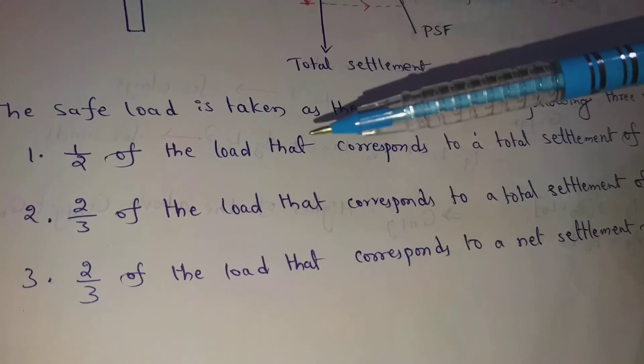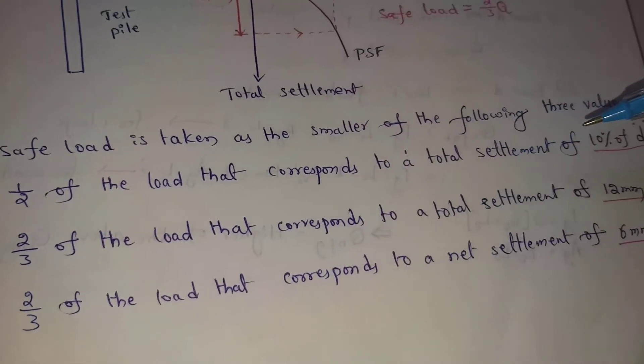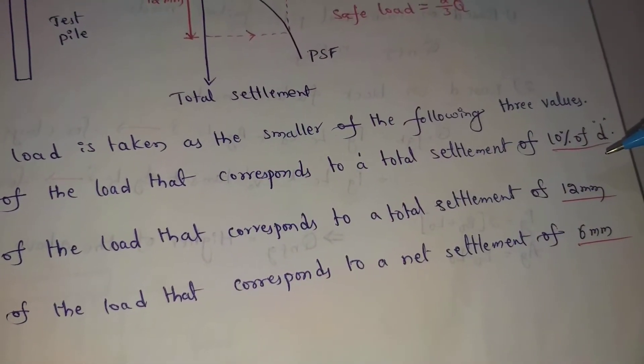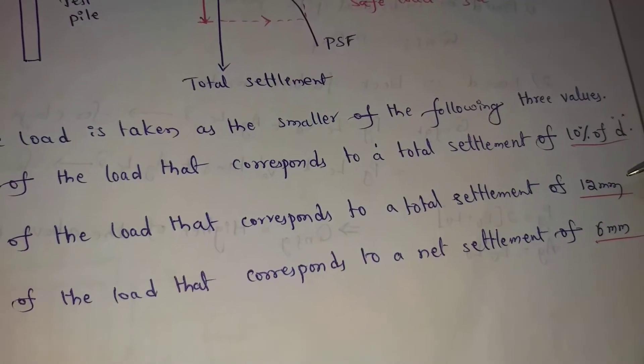Next: two-thirds of the load that corresponds to a total settlement of 12 mm.